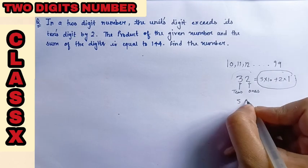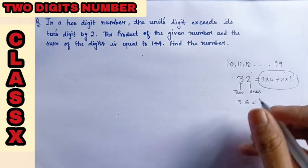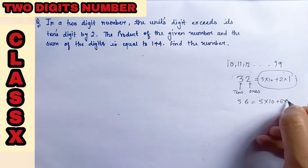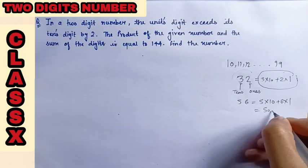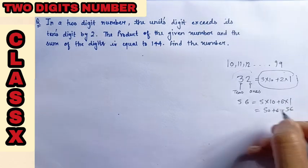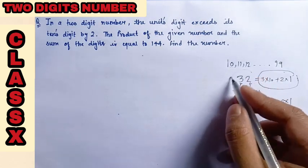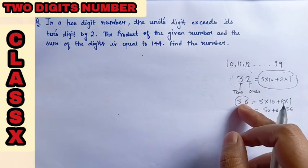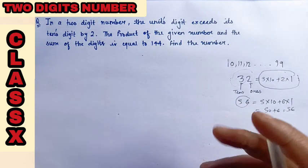If I have 56, then 5 into 10 plus 6 into 1, that is 50 plus 6, equals 56. So it's a specific example. 32 is a specific example, 56 is specific. If we consider a general example, general example...